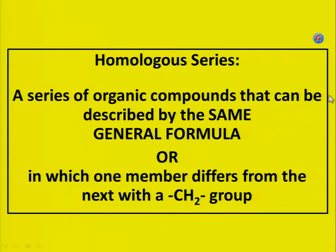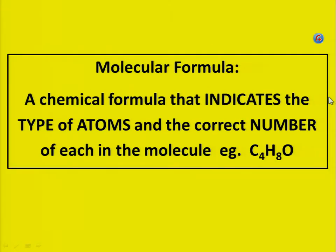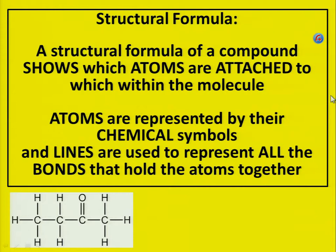Homologous series continued: or in which one member differs from the next by a CH₂ group. Molecular formula: the chemical formula that indicates the type of atoms and the correct number of each in the molecule. Example: C₄H₈O.